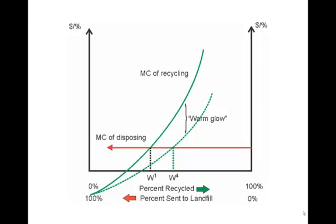What's another reason why households may recycle? One commonly referred to cause is what we call warm glow — that warm, fuzzy, good feeling that we get from recycling. This is certainly prevalent in many households, where people say, why do you recycle? Well, it's the right thing to do. It's not that I'm saving money or it's easier, but rather there's some sort of social compulsion or internalized value that people have decided makes them want to recycle. In an economic framework, the effect of this is basically to shift the marginal cost of recycling down, so that the equilibrium moves to the right, and people recycle at W4 — a higher level than the purely economically rational W1.